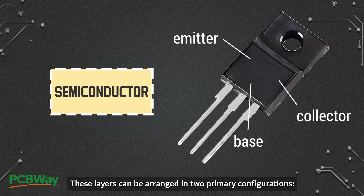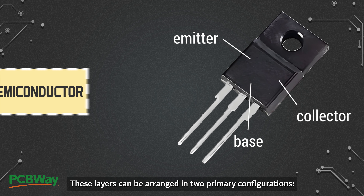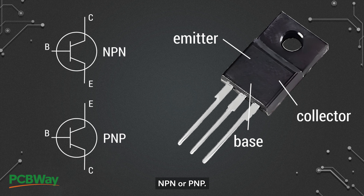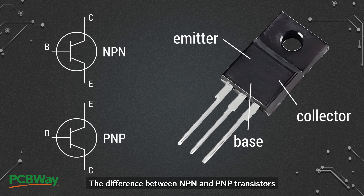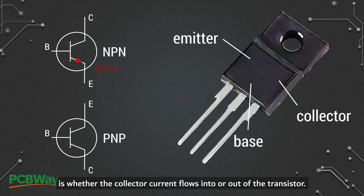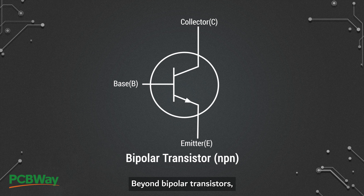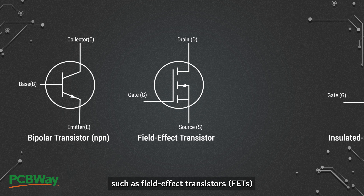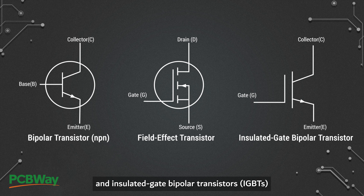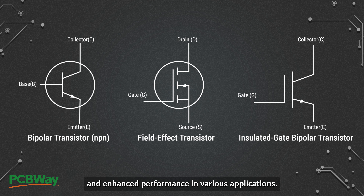These layers can be arranged in two primary configurations: NPN or PNP. The difference between NPN and PNP transistors is whether the collector current flows into or out of the transistor. Beyond bipolar transistors, advanced types such as field effect transistors and insulated-gate bipolar transistors offer specialized functionalities and enhanced performance in various applications.